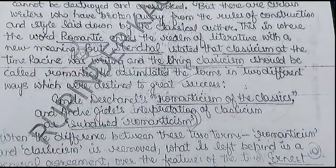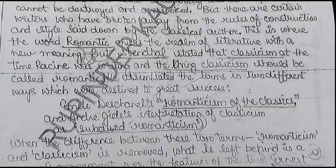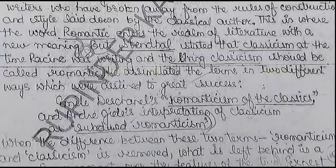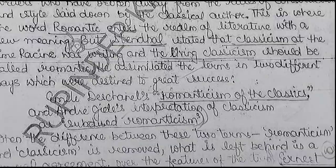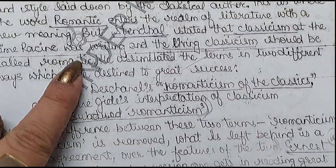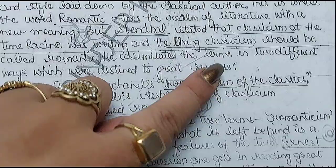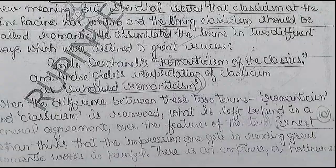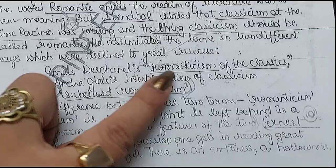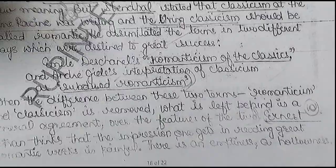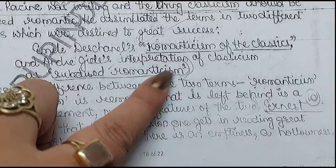Different writers have different points of view. Basically classicism means very strict, disciplined thought. When some relaxation comes into that thought and movement toward emotion, then that class becomes romantic — it should be called romantic. Stendhal assimilated the terms in two different ways. One term is Emily Dischnell's 'romanticism of the classics' — how can classics have romanticism? When relaxation comes in romanticism and emotion becomes more powerful. And Andre Gide's interpretation of classicism as 'subdued romanticism' — where romanticism has been suppressed and emotion controlled.